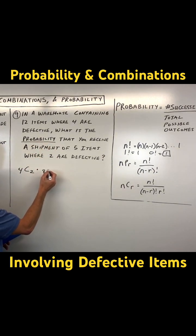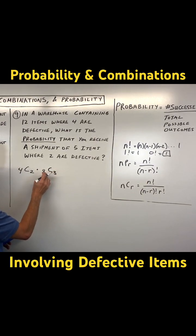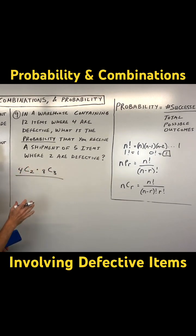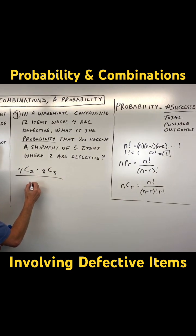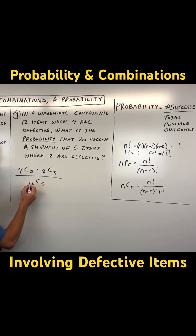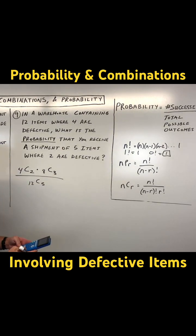And then out of the eight good ones, how many ways are there to receive three of the good ones out of the eight good ones? That's going to give us the total number of successes — what you're looking for — divided by the total possible ways of receiving five items from this warehouse that has 12 of these items. So this is the total possible. Let's see what that comes out to.